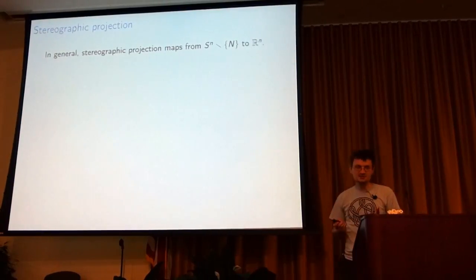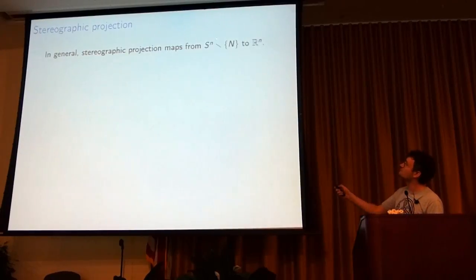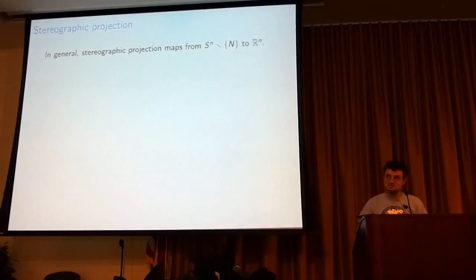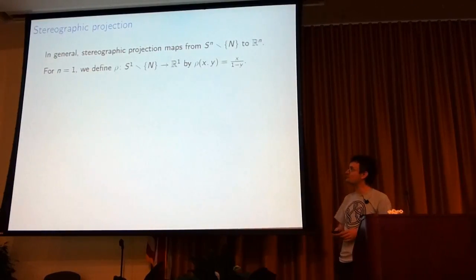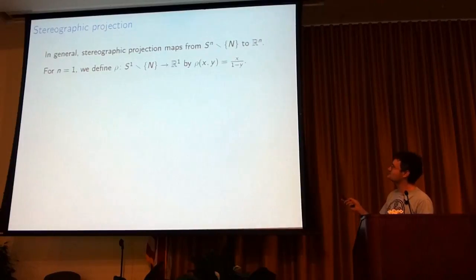In general, stereographic projection takes you from S^n, the n-dimensional sphere, which is the unit sphere in R^(n+1), down to R^n. So I have to remove a point, I'm going to remove the north pole of the n-sphere and then project it down to R^n. So the simplest case is when n is 1, so S^1 otherwise known as the circle.